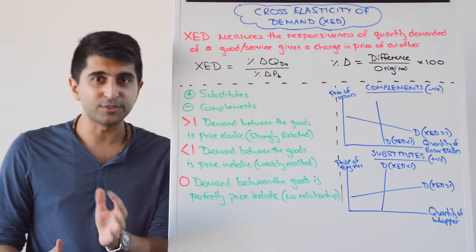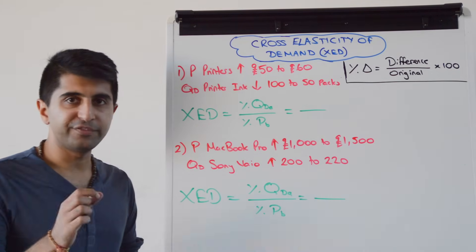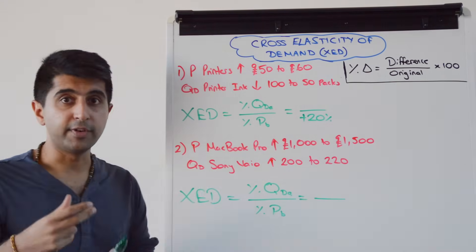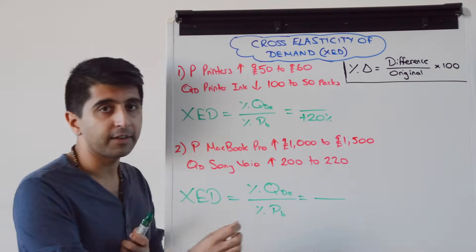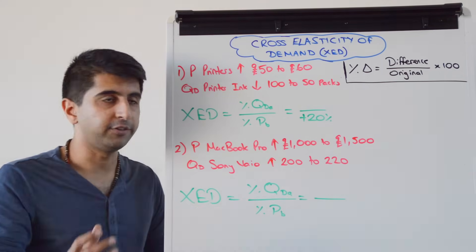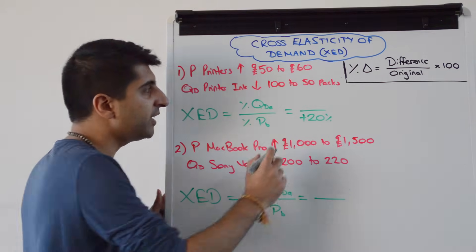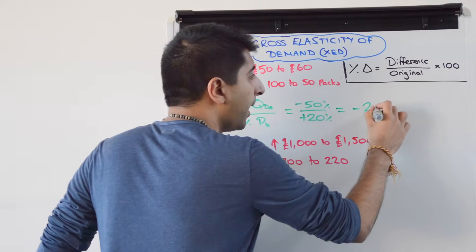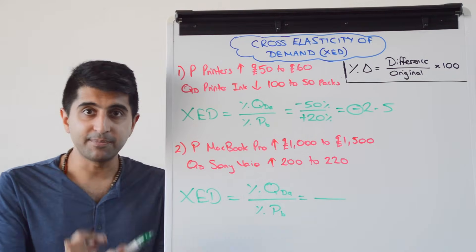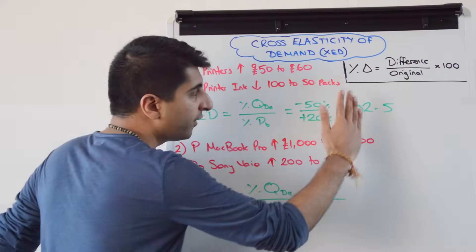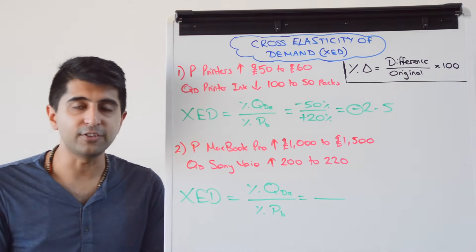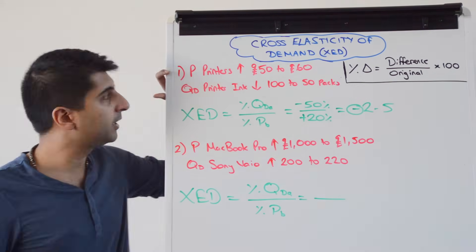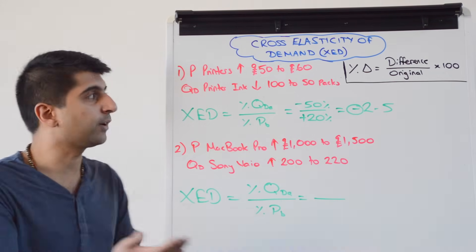Let's do some calculations. Example one: the price of printers goes up from £50 to £60 — that's a 20% increase (difference is 10, original is 50, times by 100). Quantity demanded of printer ink goes down from 100 to 50 — that's clearly a 50% decrease. Leave the signs in, and the final figure is minus 2.5. The negative sign tells us these are complementary goods. Ignoring the sign, the figure is greater than one, so demand between these goods is price elastic — they are closely related complements. As the price of printers goes up, quantity demanded of printer ink goes down proportionally more than the increase in price of printers.